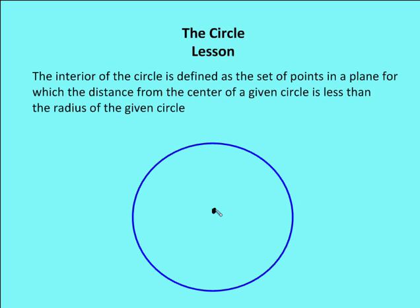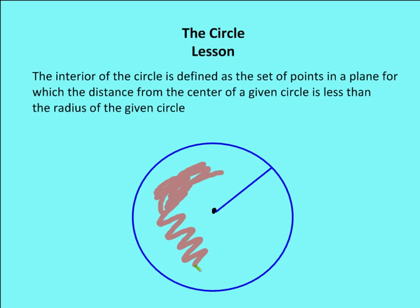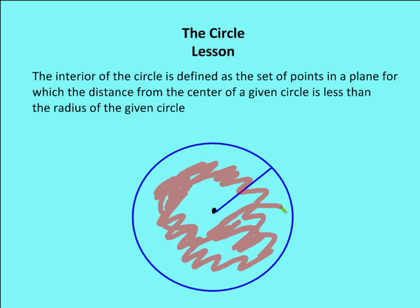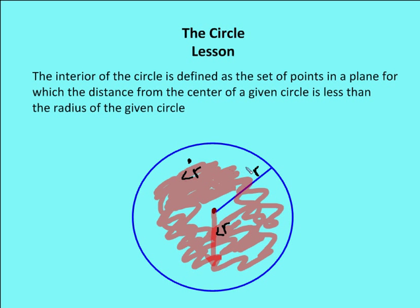The interior of a circle is defined as the set of all points in a plane for which the distance from the center of a given circle is less than the radius for that given circle. Here I identify my radius in blue, and the interior of that circle is going to be any point inside the circle in which the distance from the center of the circle to that point is less than the radius.